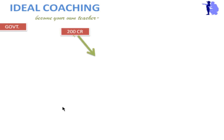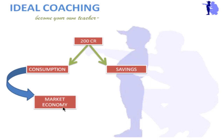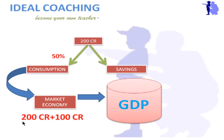When people have this 200 crores, there are two uses for it: either they will consume or they will save, in some proportion. When consumption happens, money comes into the market, and when money comes into the market, our GDP grows further. Suppose from this 200 crores, about 50 percent is consumed — then these 100 crores will be an additional increase in our GDP. So 200 plus 100 gives us 300 crores, meaning our GDP has now increased by 300 crores.